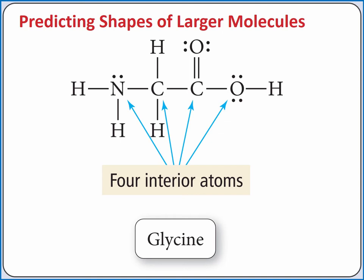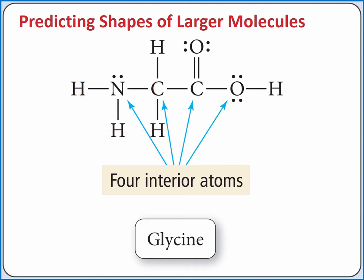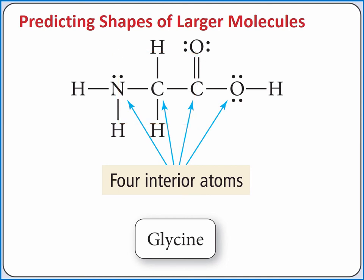We can apply VSEPR theory to determine the molecular geometry around each of the four interior atoms. For nitrogen, we have three bonding groups and one lone pair, so the molecular geometry is trigonal pyramidal. For the leftmost carbon, we have four bonding groups and no lone pairs, so the molecular geometry is tetrahedral.